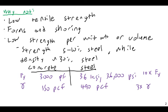Even though steel is stronger per unit weight than concrete, concrete is so enormously cheaper that it often has a superior strength-per-dollar value. However, if you have any application where weight is absolutely critical, concrete is definitely not going to be your material of choice.